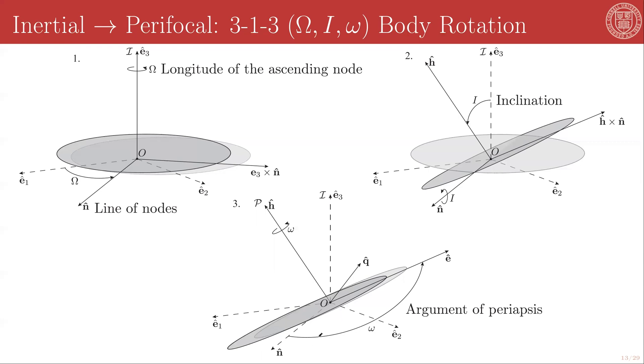Omega is called the argument of periapsis because the eccentricity direction is the periapsis direction. And this is the angle between the original plane, E1, E2, and the eccentricity direction.